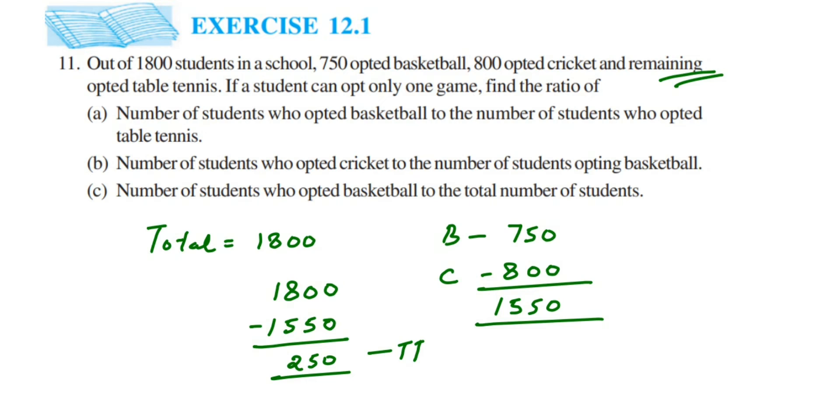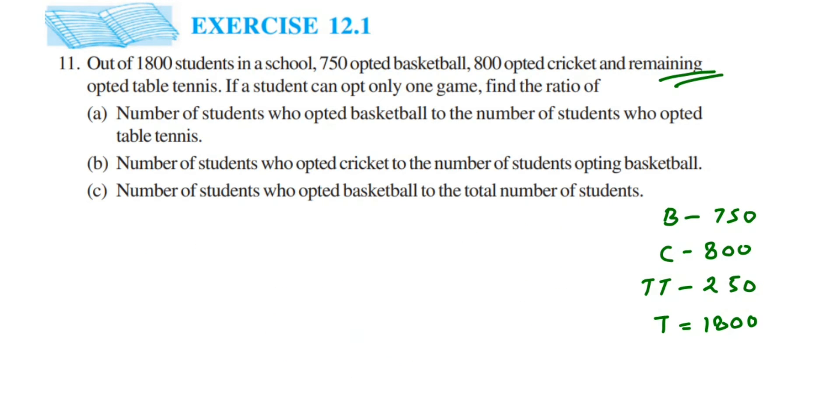So now we got the whole data. Using this we're going to find out the answer for these three questions. So first, basketball is 750 students, cricket 800 students, table tennis 250 students, and total students are 1800. Everything is given in the question, only thing is you have to find out how many students opted for table tennis and that you get by subtracting it.